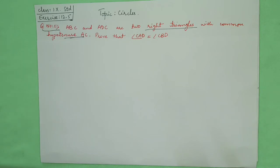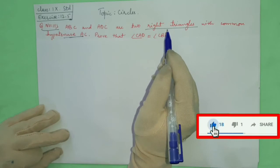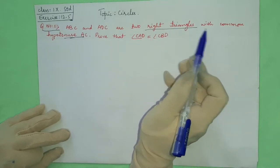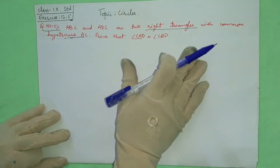ABC and ADC are two right triangles. Right triangles mean 90 degree angles with common hypotenuse AC. Prove that angle CAD is equal to angle CBD.